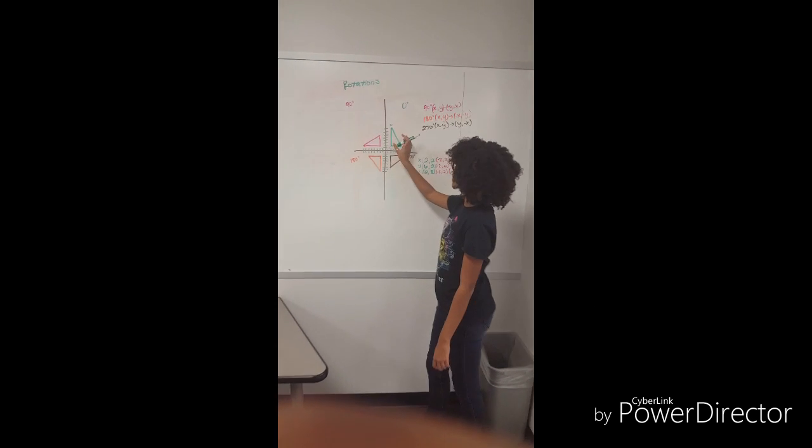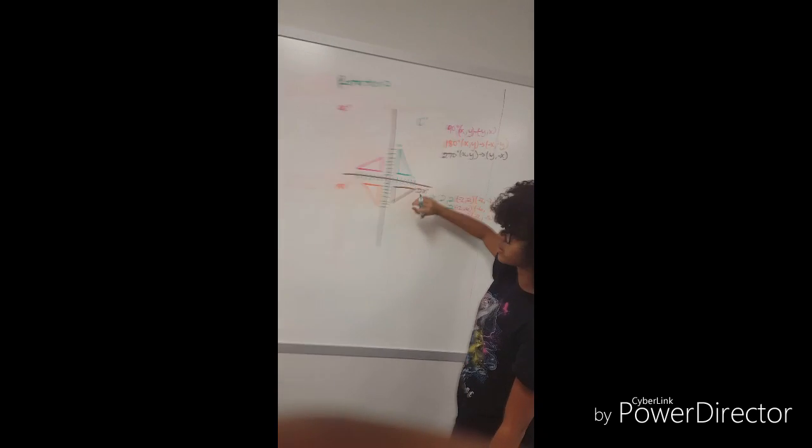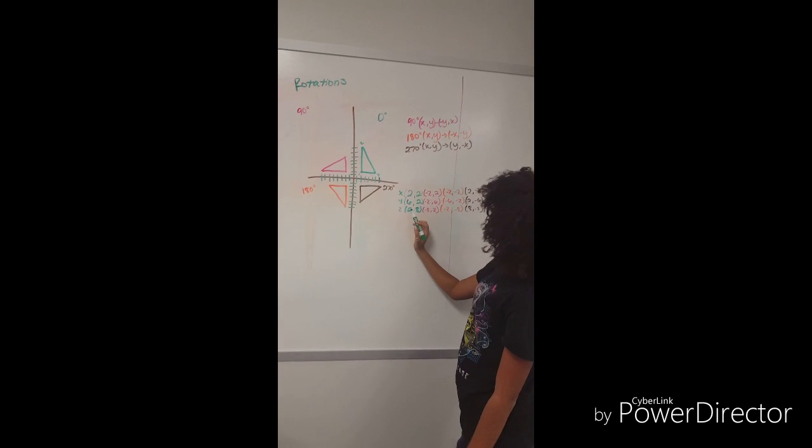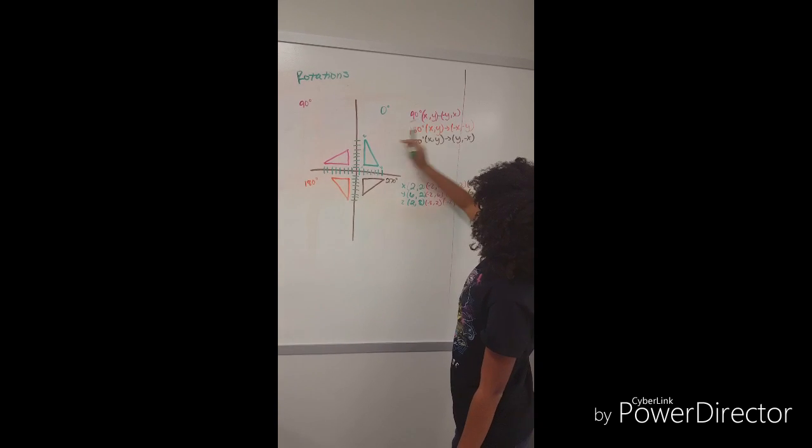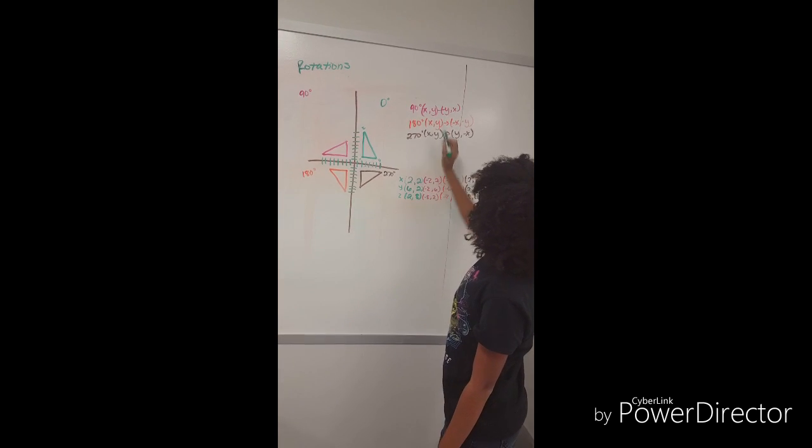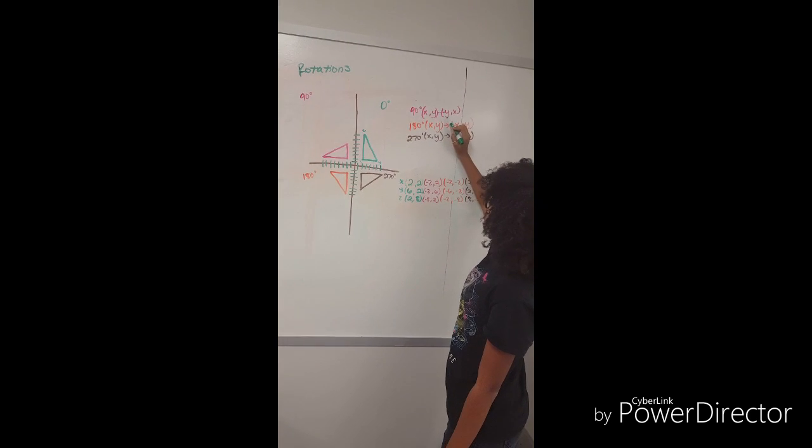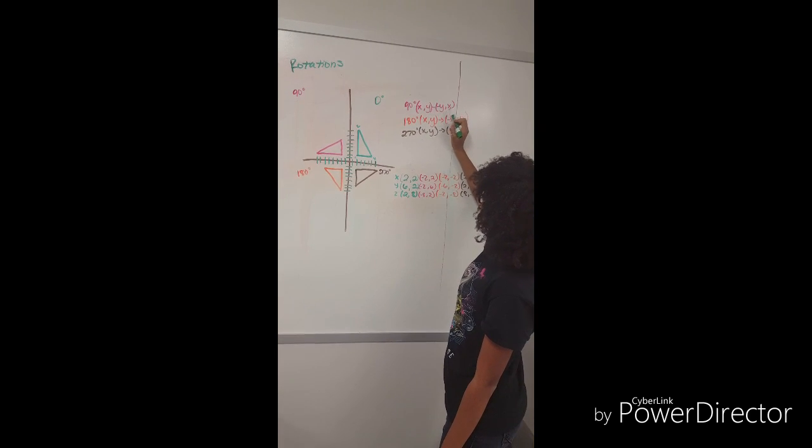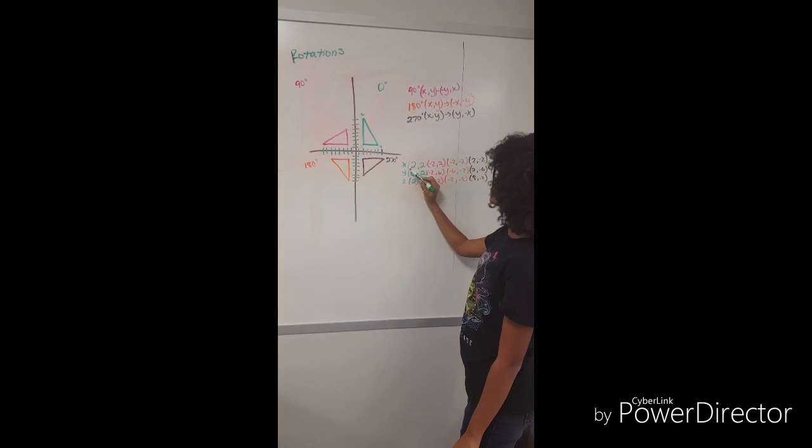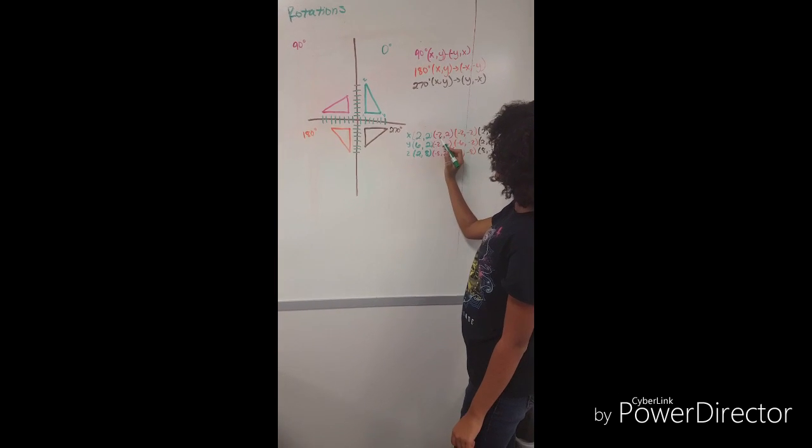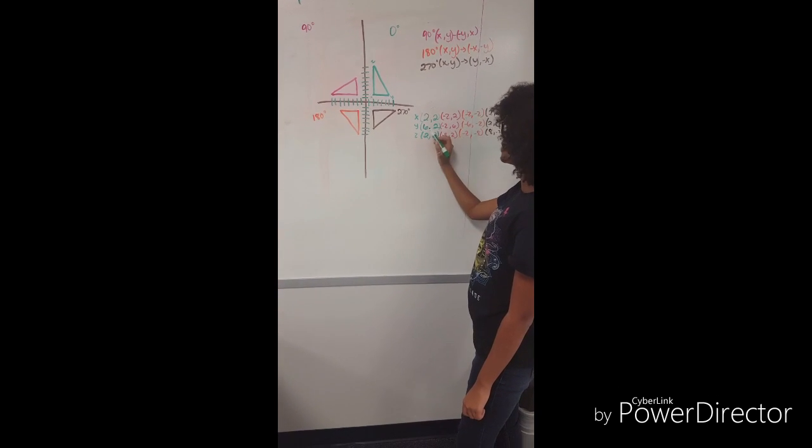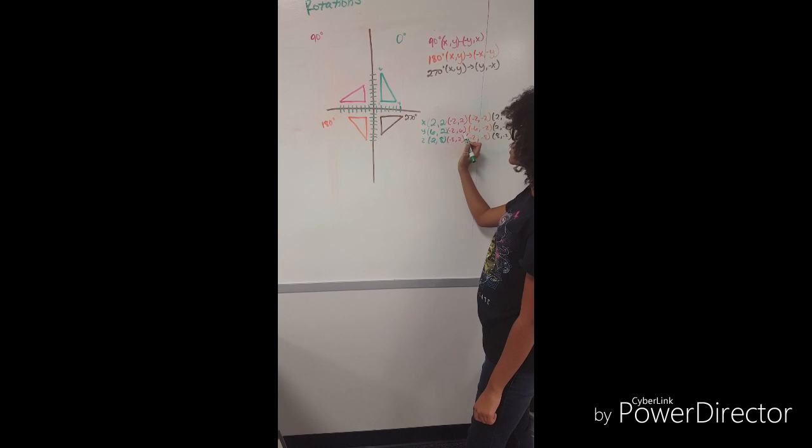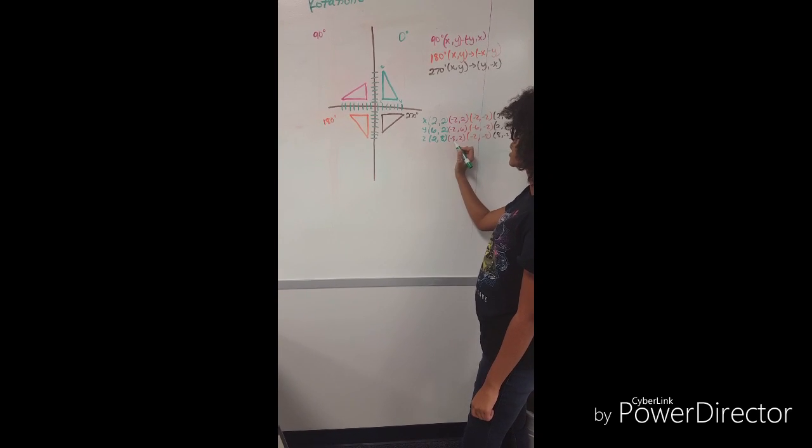Rotations is basically whenever your pre-image rotates to your foreign image around each of the axes. So if you rotate your image 90 degrees, it will go from x, y to negative y, x. So here in the example, 2, 2 will go to negative 2, 2. 6, 2 will become negative 2, 6. And 2, 8 will become negative 8, 2.